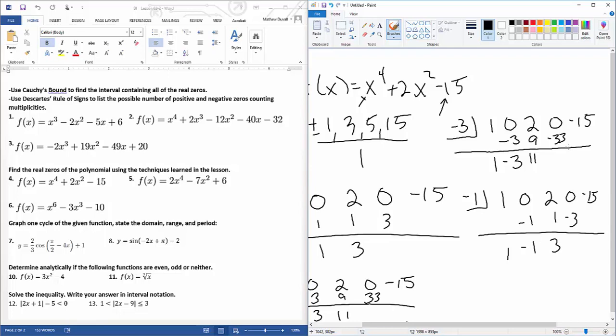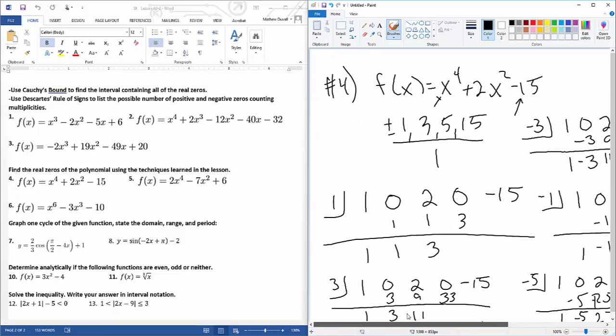Let's try the fives. Bring down the one, multiply, add, multiply. Nope, this is gonna get out of control. Negative five, same thing. Fifteen. Bring down, multiply, that would be 15, add 15, multiply. Nope, that's gonna get out of control. So none of the zeros work.